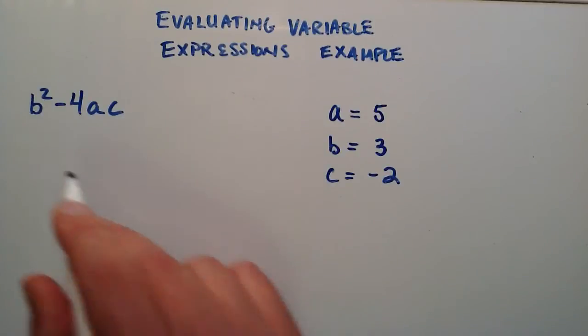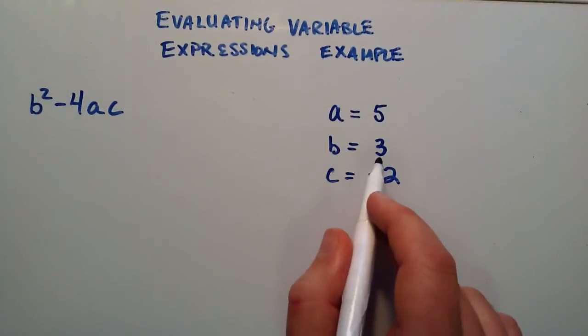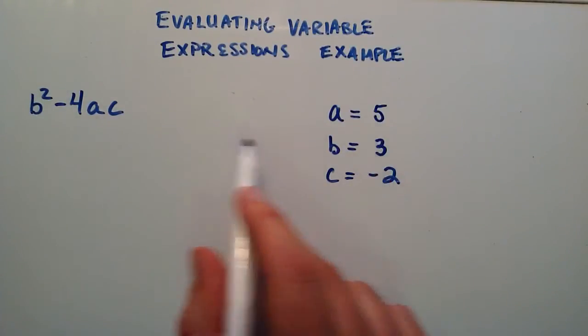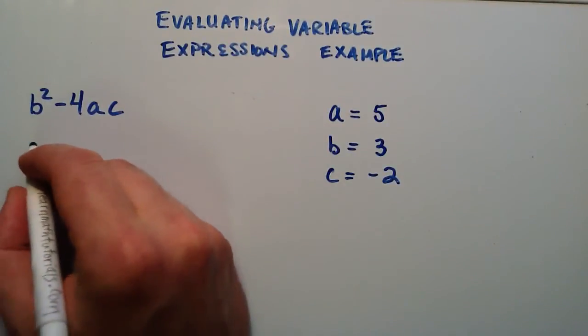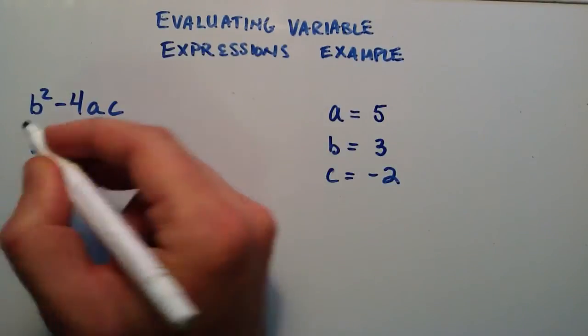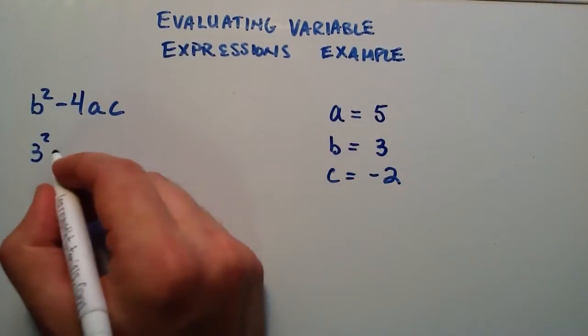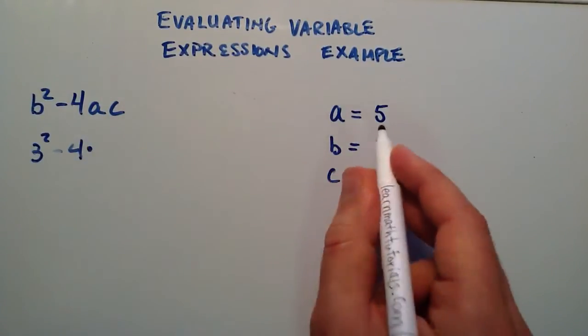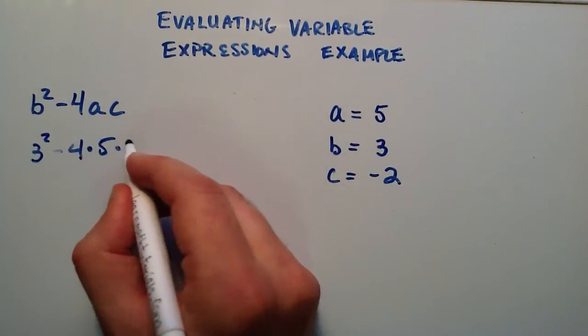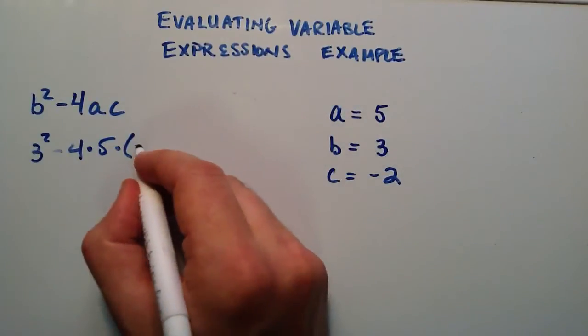So for example b becomes 3, a becomes 5, and c becomes negative 2. So let's go ahead and do that here. b squared is now 3 squared because of this right here. And then we subtract 4 times a times c, and a was given to be 5, and that's multiplied by c which we said was negative 2.